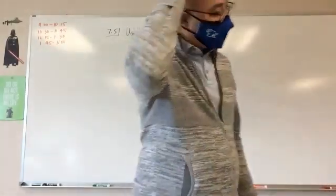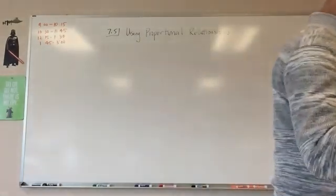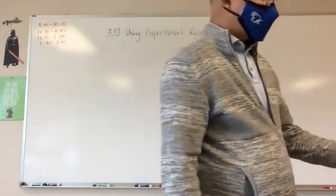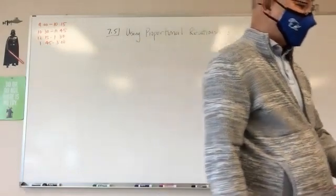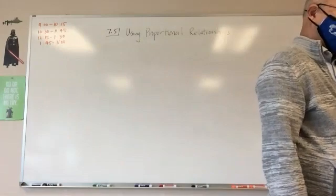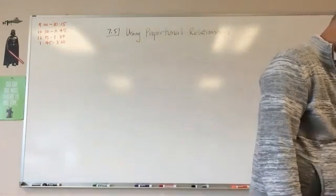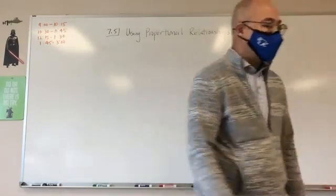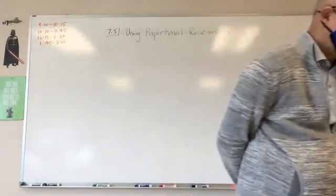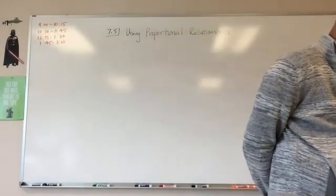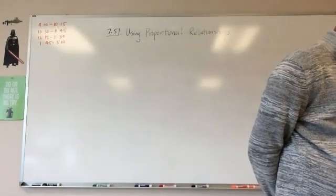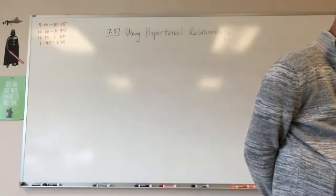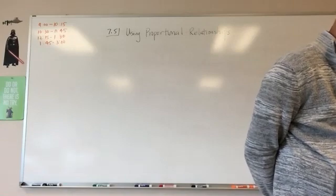Section 7.5 using proportional relationships. We're going to go through a quick series of applications and word problems. We are on page 502. An indirect measurement is any method that uses formulas, similar figures, and or proportions to measure an object. The following example shows one indirect measurement technique.